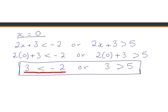Now 3 less than −2 is not true, and 3 is greater than 5 is not true either. So we have failed to satisfy at least one of the inequality statements. Therefore 0, which is the number we checked, is not part of the solution — as we expected.